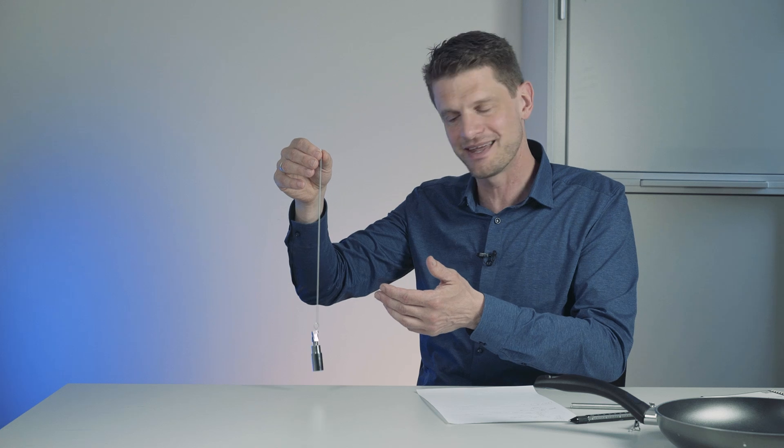As we just learned in the two videos before, if a system can oscillate, it's an oscillating system. There are three values we keep in mind.